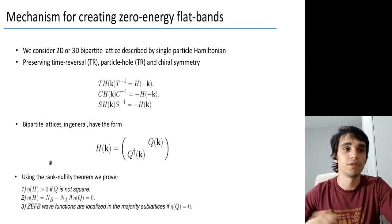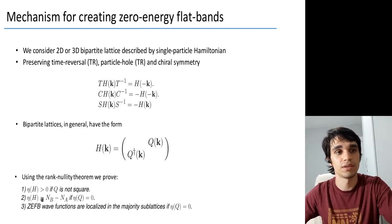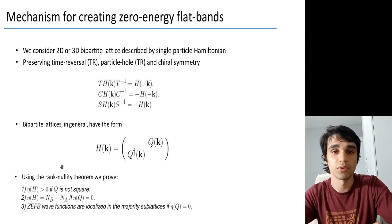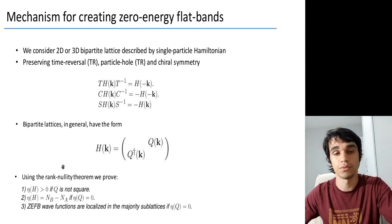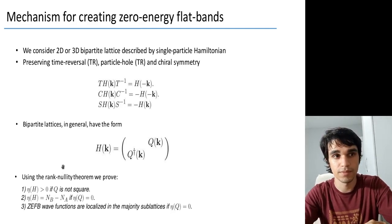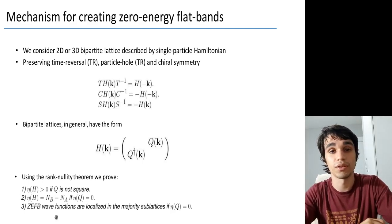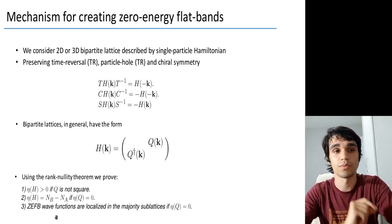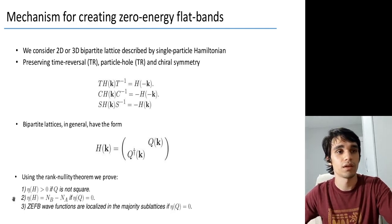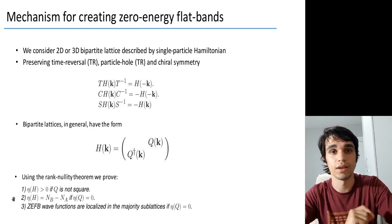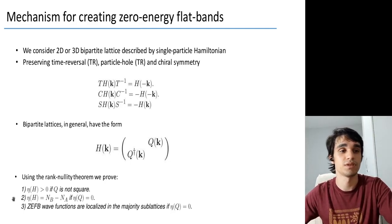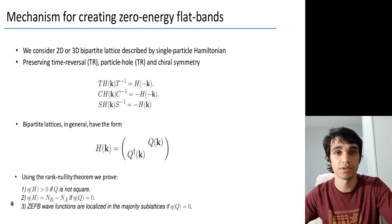The precise value of this nullity is the number of sites in the B sublattice minus the number of sites in the A sublattice, provided that the nullity of Q itself is equal to zero, which is true in most cases. The zero-energy wave functions are localized in the majority sublattice, also provided that the nullity of Q is equal to zero. The first and the second propositions are the essence of the Lieb theorem. The third proposition is a consequence of the chiral symmetry that we start with.